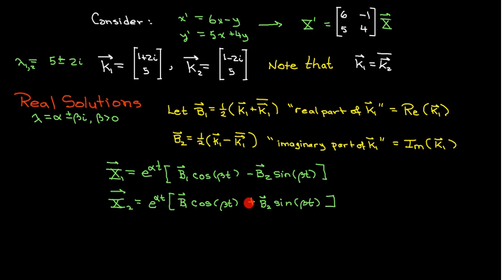That makes sense because all you're doing to get the second solution is replacing beta with negative beta. Since cosine of negative beta t is the same as cosine of beta t, while sine of negative beta t is the opposite of sine of beta t, that's why your minus becomes a plus for the second solution.